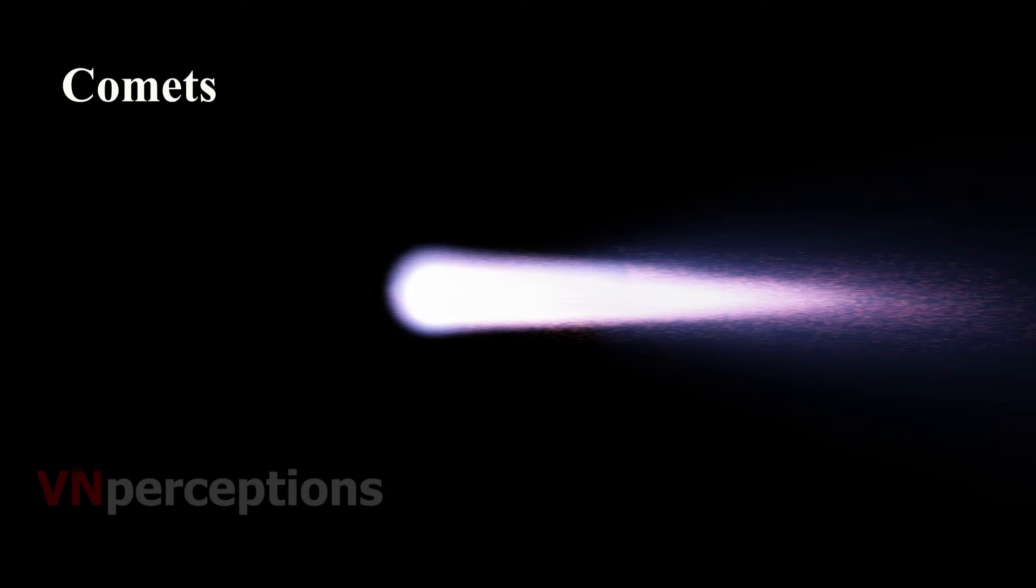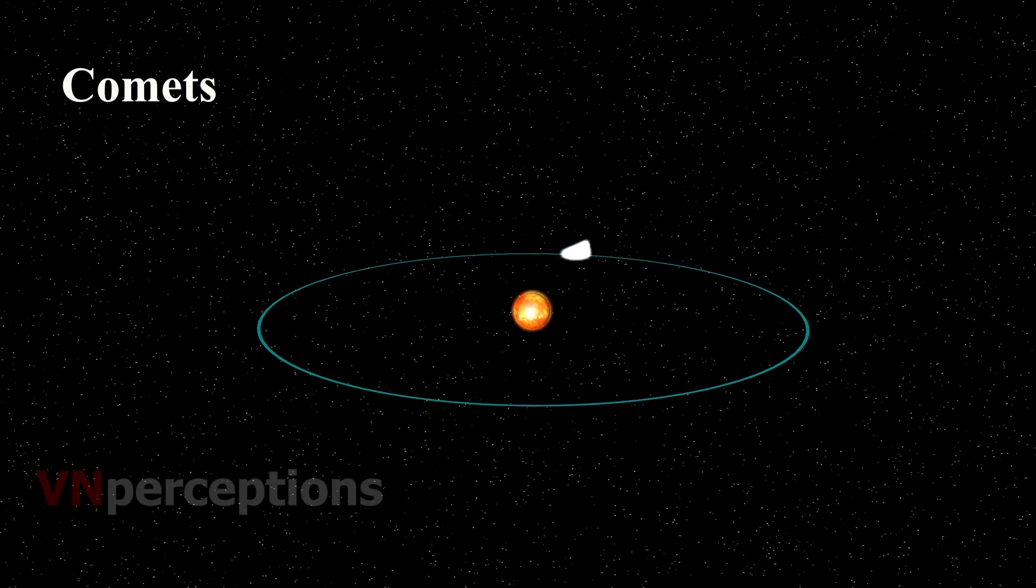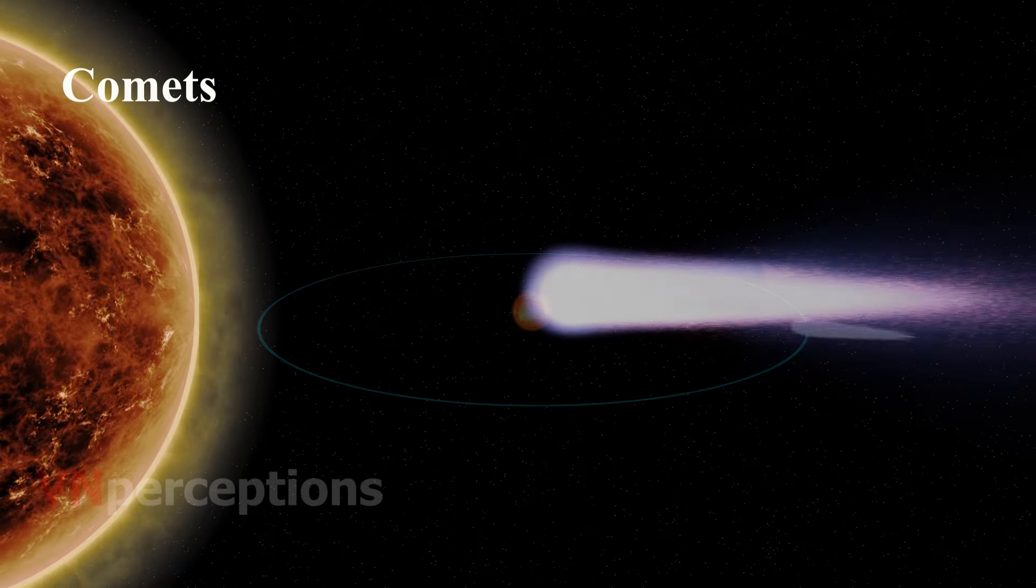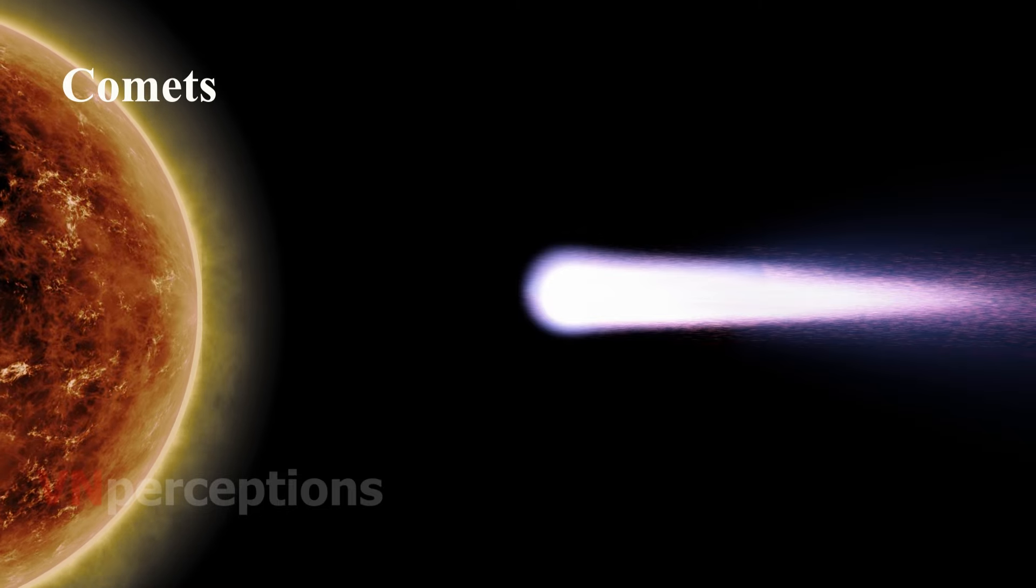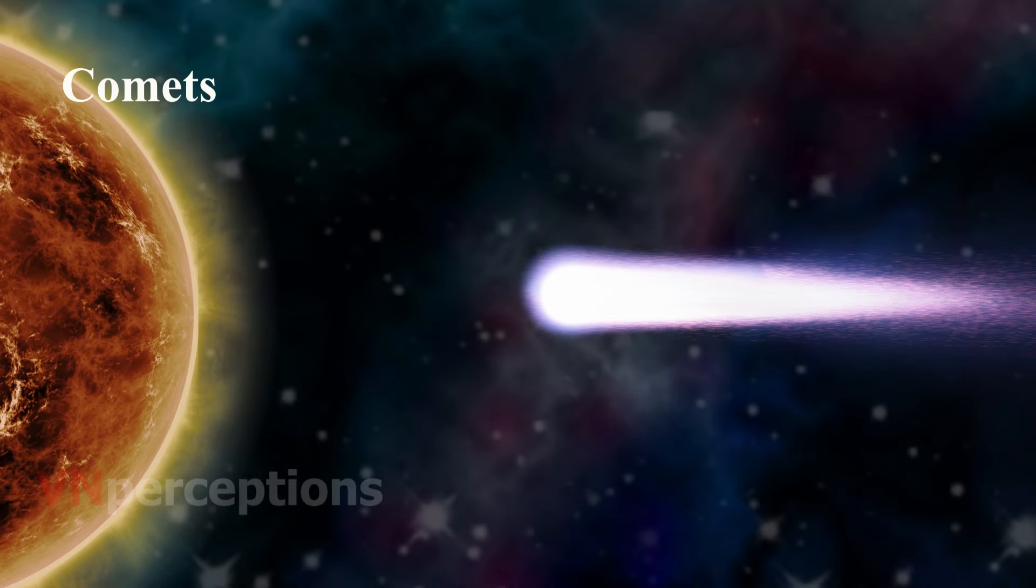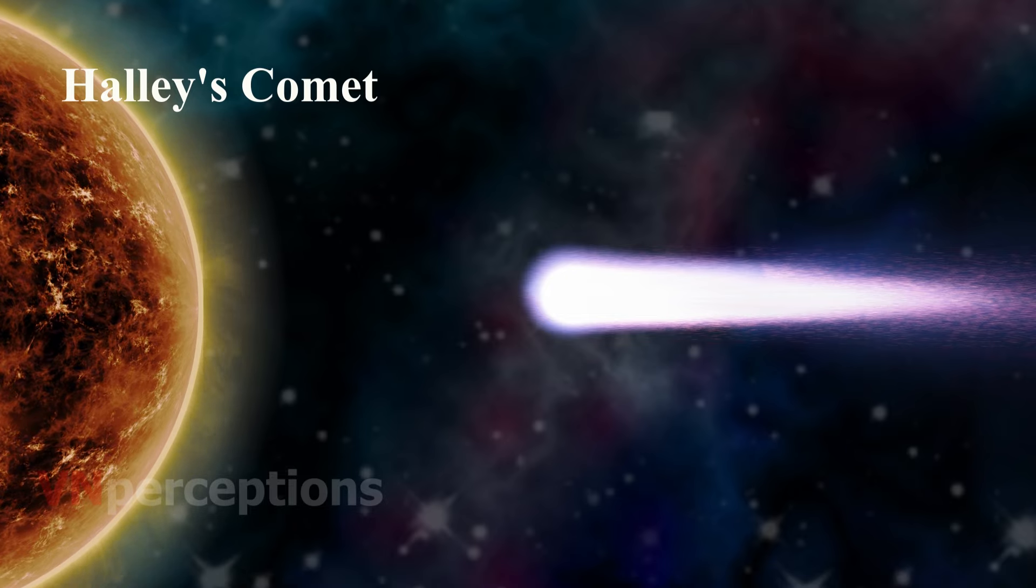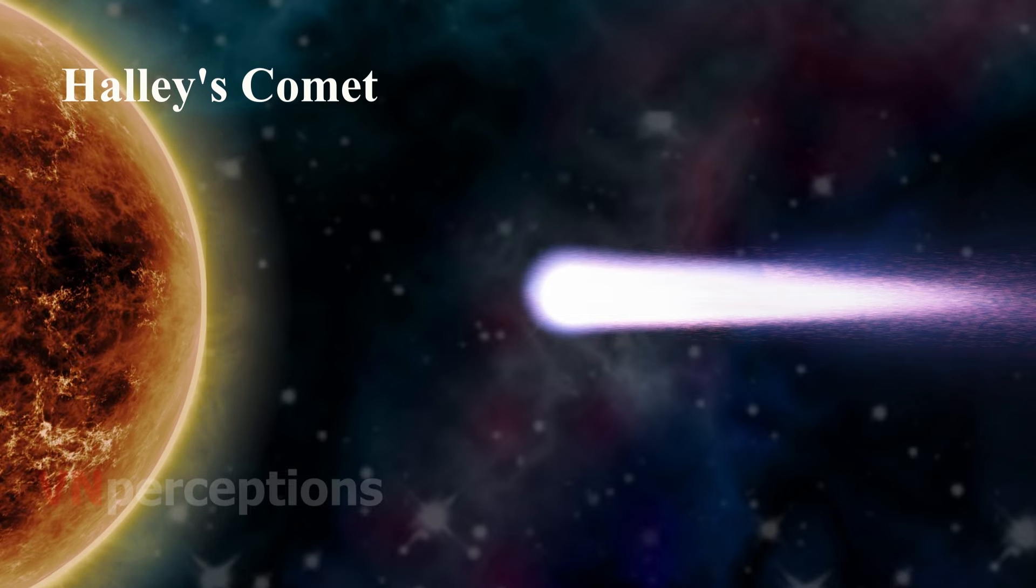Then it is comets. Comets are also members of our solar system. They revolve around the Sun in highly elliptical orbits. However, their period of revolution around the Sun is usually very long. A comet appears generally as bright head with a long tail. The length of the tail grows in size as it approaches the Sun. The tail of a comet is always directed away from the Sun. Many comets are known to appear periodically. One such comet is Halley's Comet, which appears after nearly every 76 years. It was last seen in 1986.